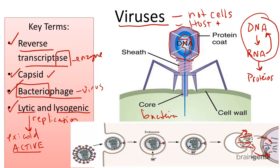The lysogenic cycle is a bit different. Think of 'lyso' and think sleep — the lysogenic cycle is like a sleep mode. In this stage, the virus enters the nucleus of a cell, and its DNA becomes a permanent part of the host chromosome. The genes might stay inactive for a long, long time — perhaps months or years.